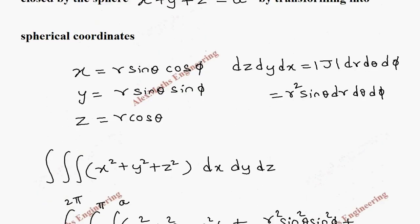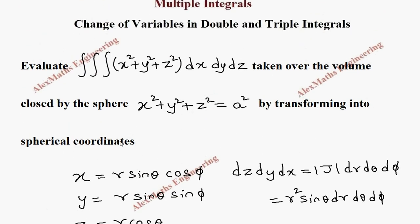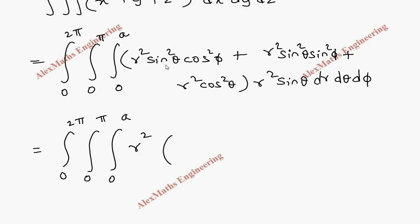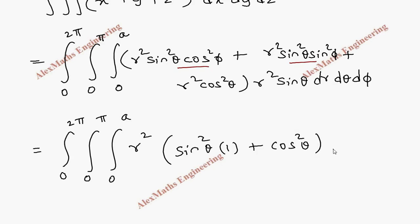These are the values we take as the element in spherical coordinates. We can take r² common. From the first two terms, sin²θ is common, so the remaining is cos²φ + sin²φ = 1. The third term gives cos²θ, so the total is also 1, along with the factor r² sinθ.